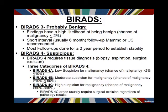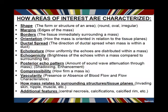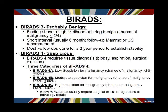BI-RADS 4 is divided into three subcategories. BI-RADS 4A has a chance of malignancy between two and ten percent — a low suspicion for malignancy. Many things we biopsy fall into this category: it needs a tissue sample to figure out what it is, but the radiologist is not very worried. BI-RADS 4B has a chance of malignancy between ten and fifty percent, for when the doctor is a little more worried.